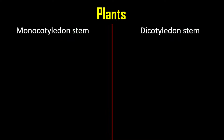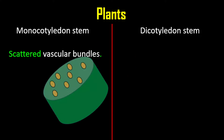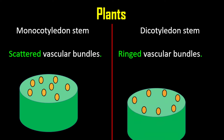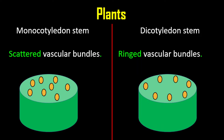For monocotyledon stems, the vascular bundle is in a scattered pattern. While in dicotyledon, the vascular bundles are normally arranged in a ring pattern.